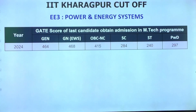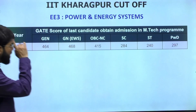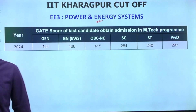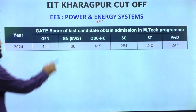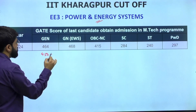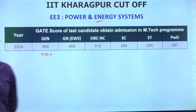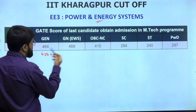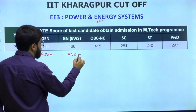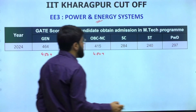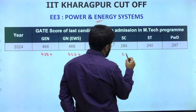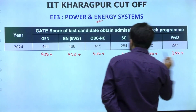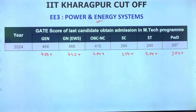The next specialization is EE3 - Power and Energy Systems. In the coming years, placements in energy-related branches are going to boost up. Even at a GATE score of 450 plus in General category, you may be able to get this course. Safe score recommendations: General - 450+, EWS - 425+, OBC - 400+, SC - 250+, ST - 200+, PWD - 300+. So at very low GATE scores, even in General category, you have a chance of getting this EE3 specialization.